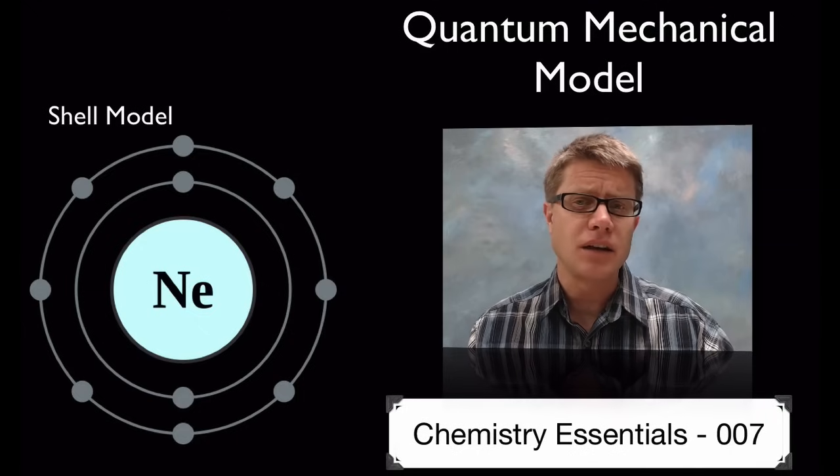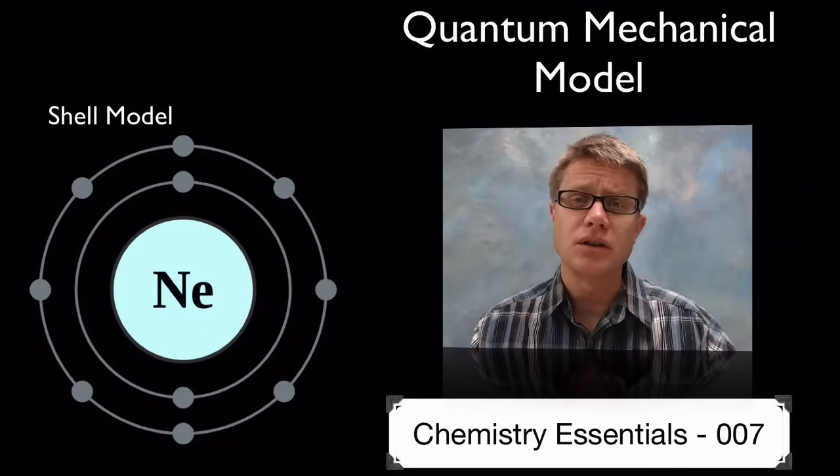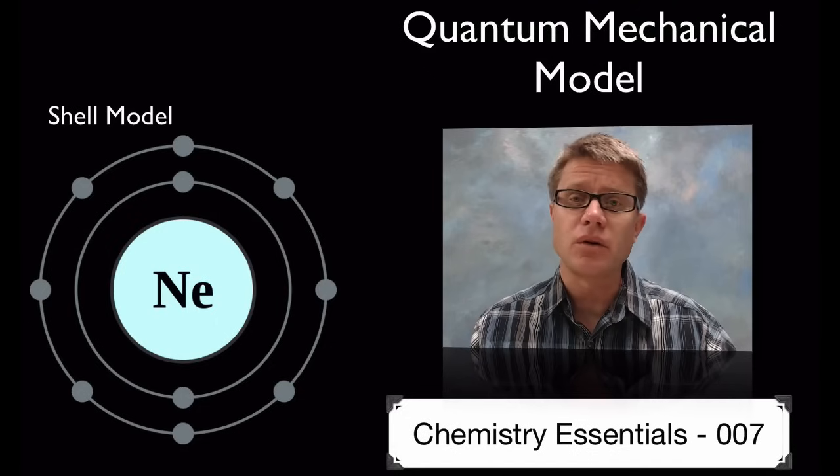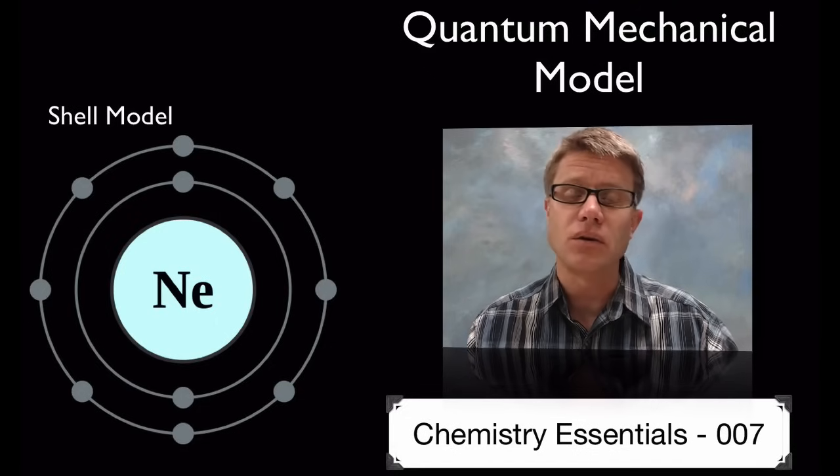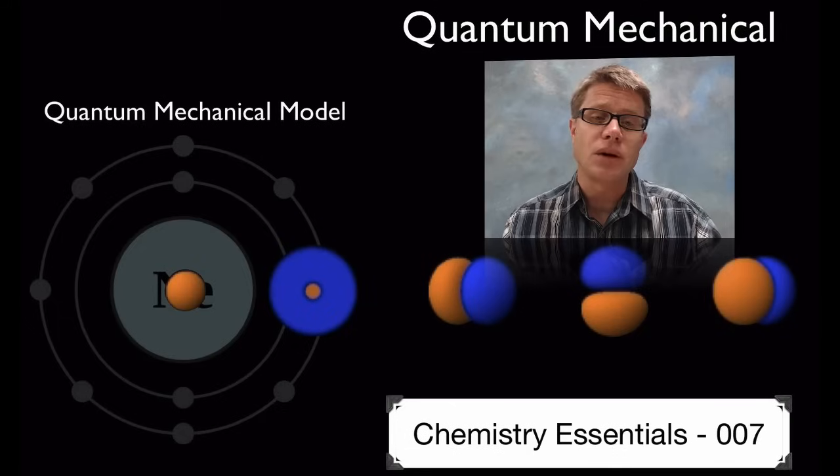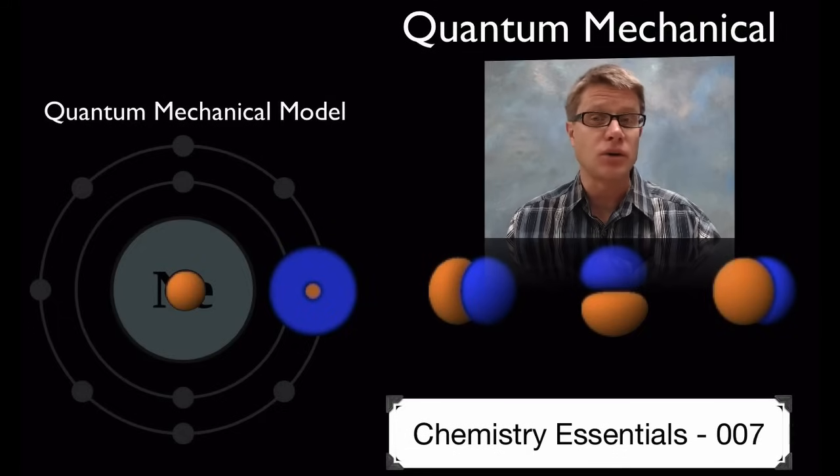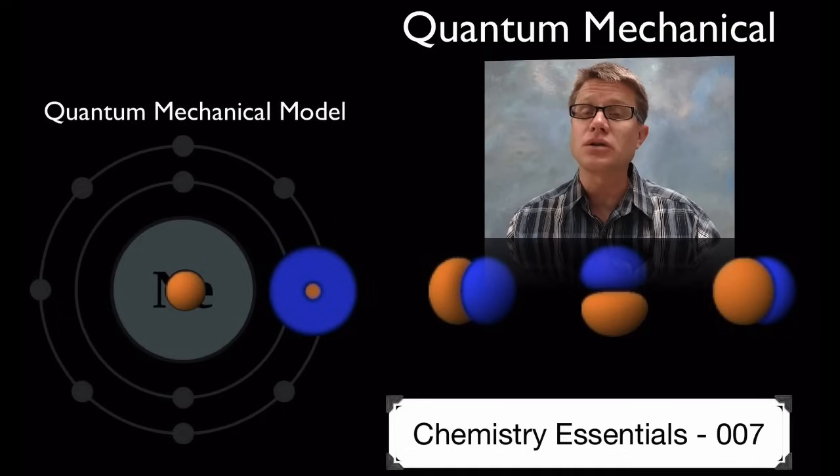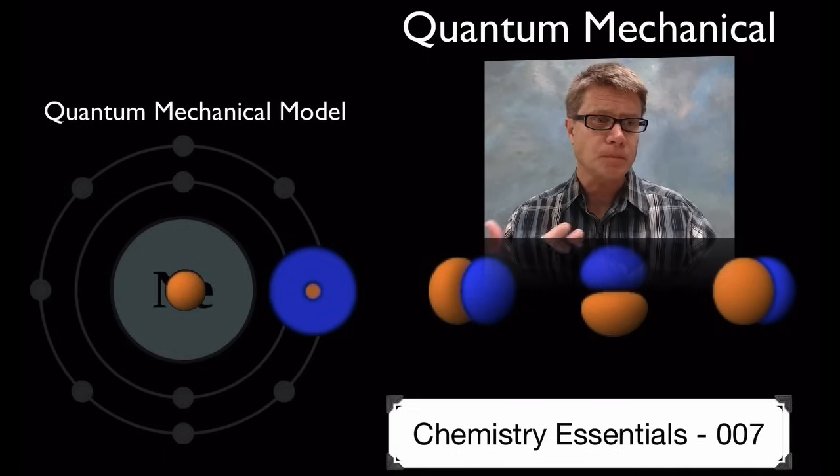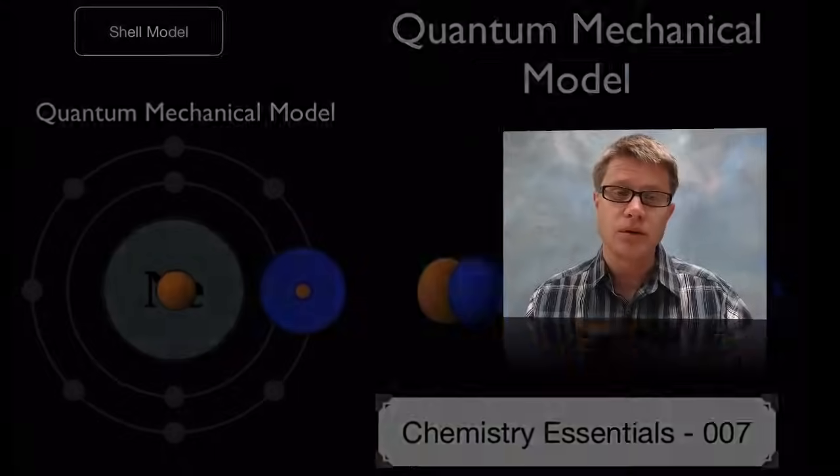And so what we've discovered since then is uncertainty in those electrons and a little bit more of the characteristics of electrons. And so this has kind of been replaced with a quantum mechanical model. Now the shell model works great at making predictions, and so does the quantum mechanical model. They're just different theoretical concepts of what an atom looks like.